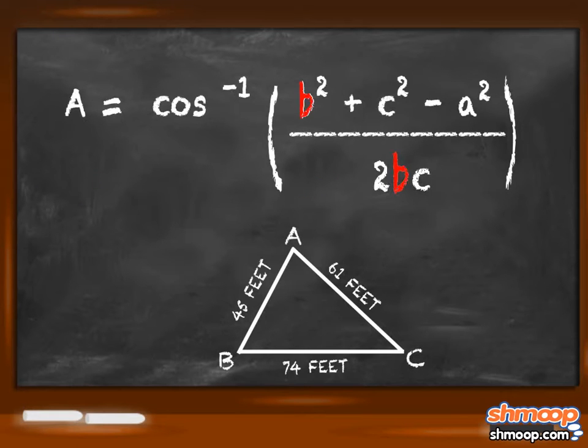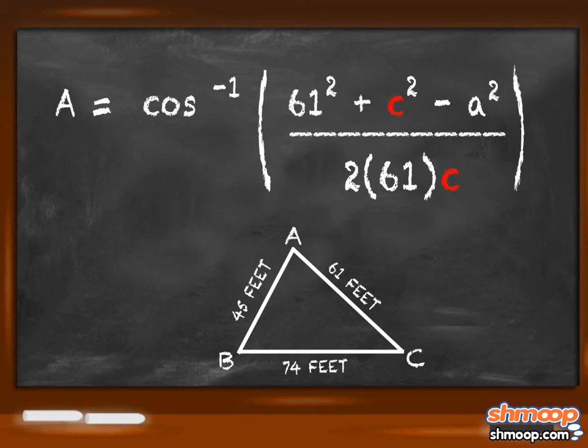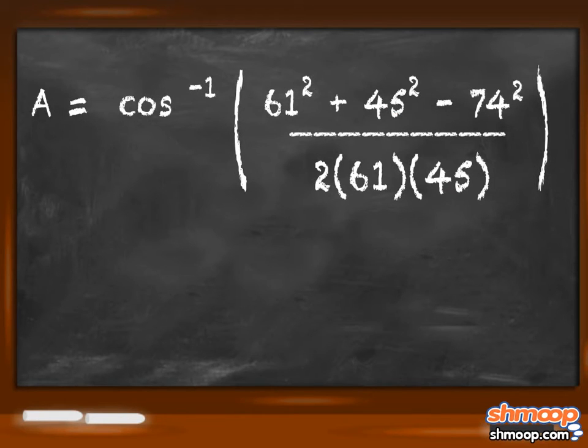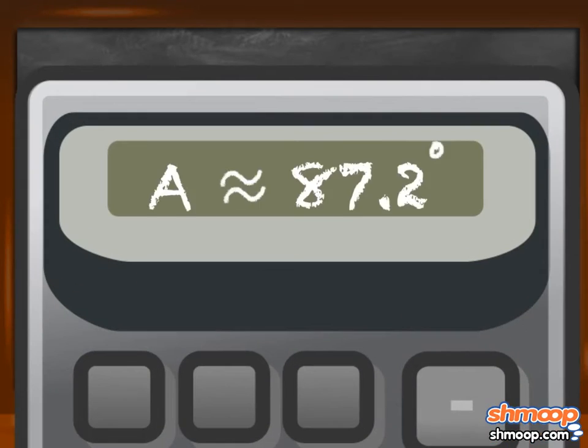Now let's just plug in b as 61, c as 45, and a as 74. Plugging into our calculators, we see that angle a equals around 87.2 degrees.